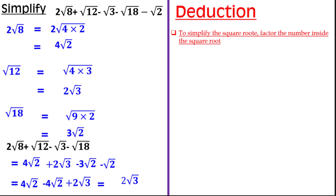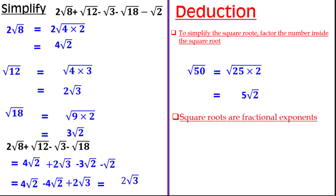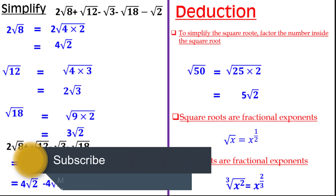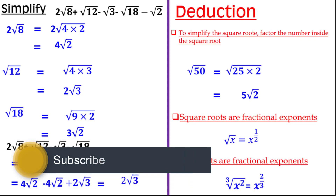To summarize the rules for simplifying square roots: factor the number inside the square root into a perfect square times another factor. For example, square root of 50 equals square root of 25 times 2, which equals 5 root 2. Also remember that square roots are fractional exponents: root x equals x to the power 1 half. For cube roots, divide by 3 — for example, the cube root of x squared equals x raised to the power 2 over 3. Thank you for watching!